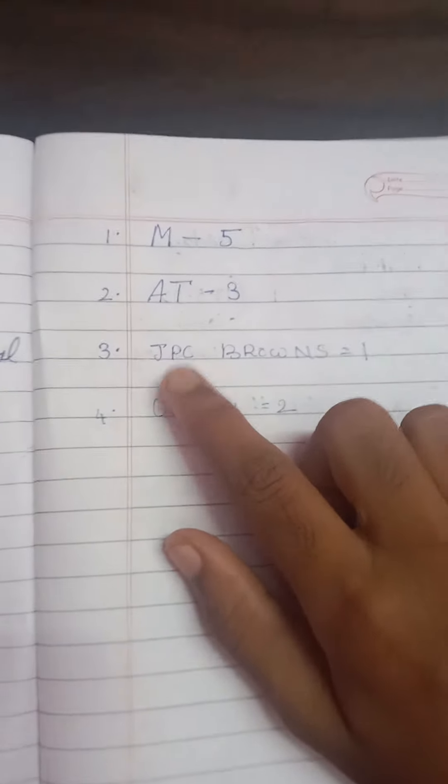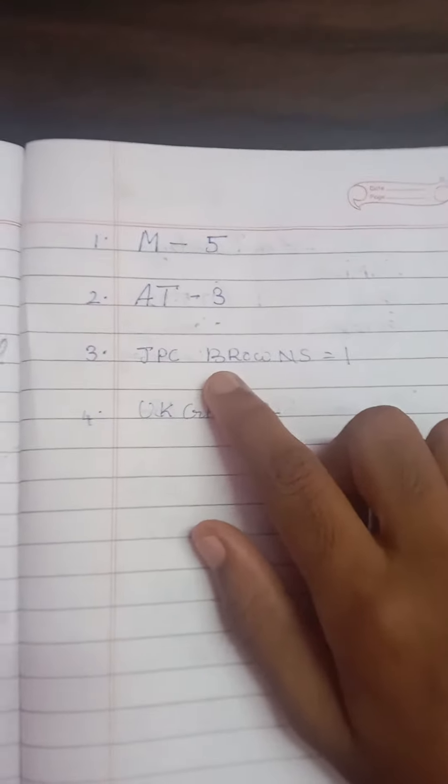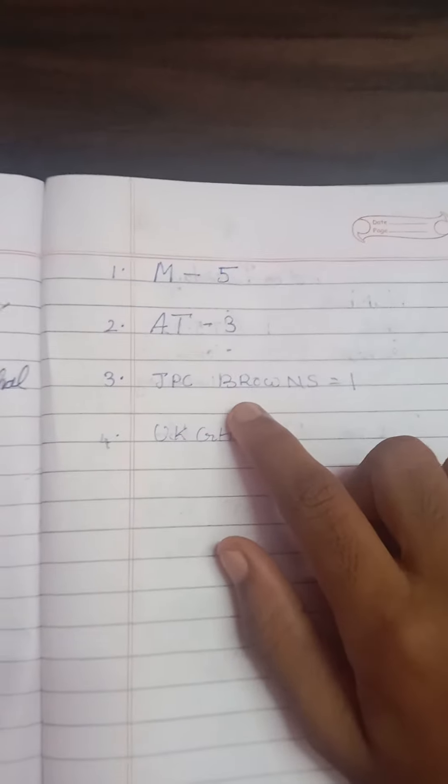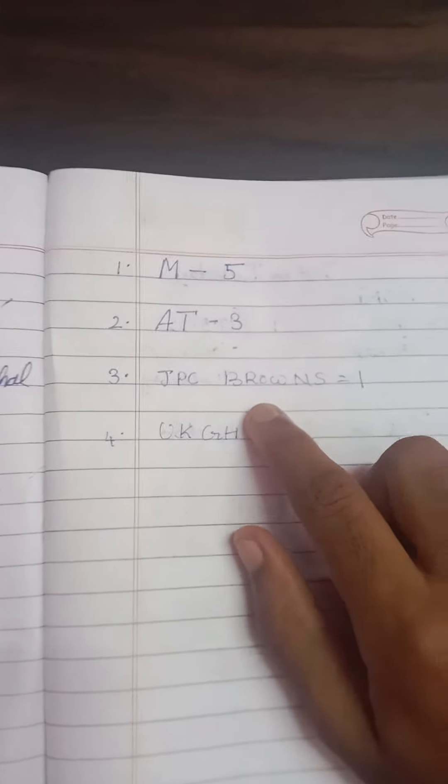...is for Punjab, C is for Chhattisgarh, B is for Bihar, R is for Rajasthan, O is for Odisha, W is for West Bengal.